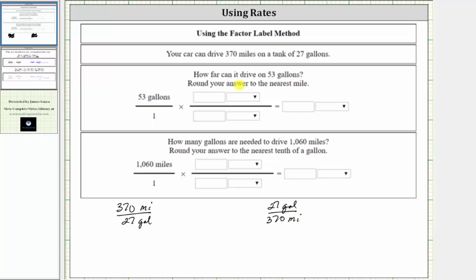To answer the first question, how far can the car drive on 53 gallons, we multiply by the rate of 370 miles per 27 gallons. We multiply by this rate so the units of gallons will simplify out, leaving us with the units of miles.